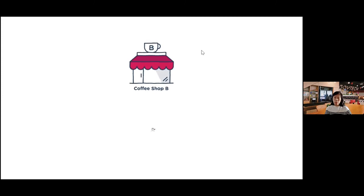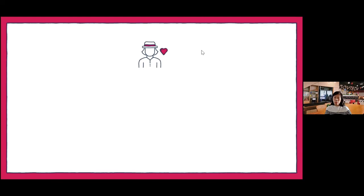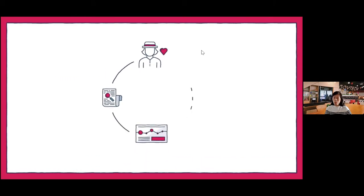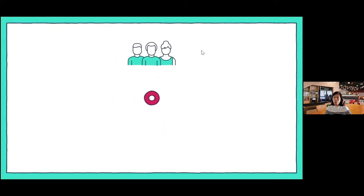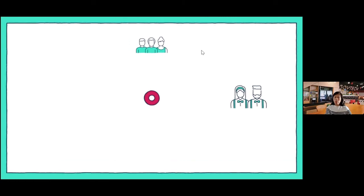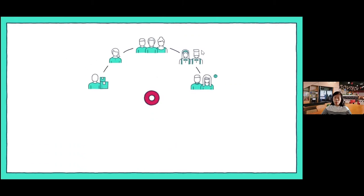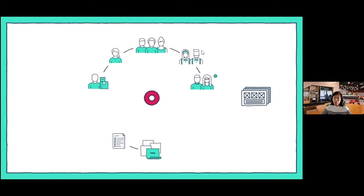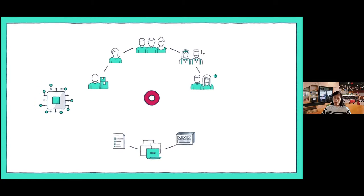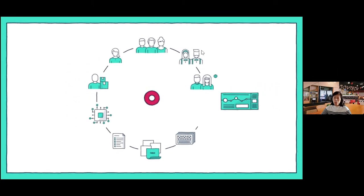Coffee shop B put the customer at the heart of the experience. They talked to them, did immersive research to understand what the customer was doing before, during, and after their coffee. They mapped this out on a customer journey, identifying the highs and lows and uncovering service opportunities. The team then spoke to colleagues in store, the founder, the marketing team, and suppliers, then ran workshops to identify the real business objective and started designing and testing concepts with customers.